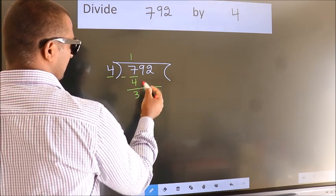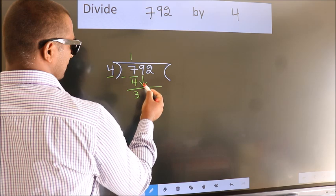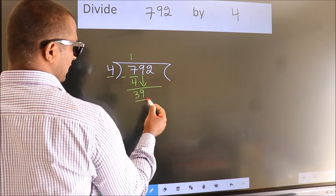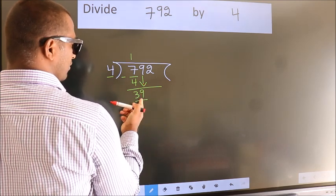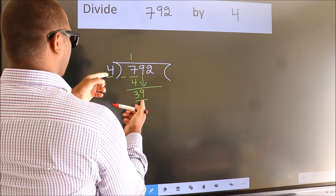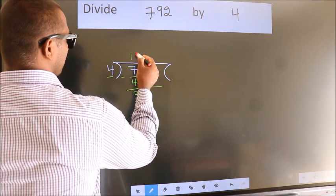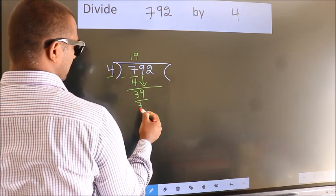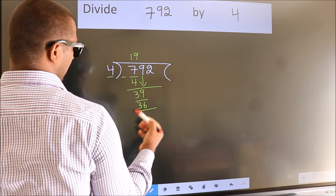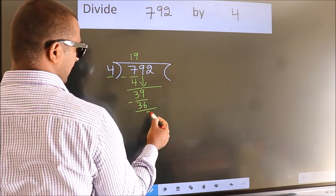After this, bring down the beside number. So 9 down. So 39. A number close to 39 in 4 table is 4 nines 36. Now we subtract. We get 3.